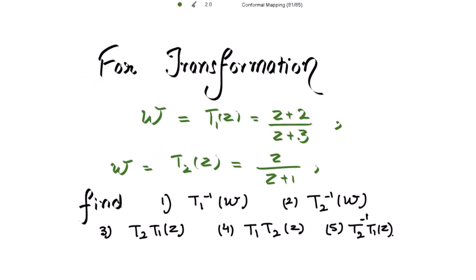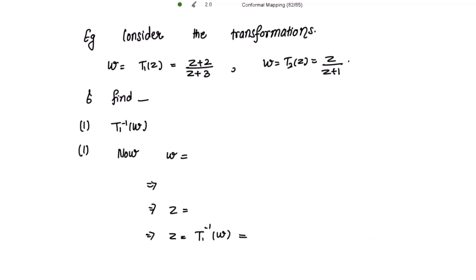Let's consider this example from the bilinear transformation. We have the transformation t1(z) equal to (z + 2) over (z + 3), and another transformation t2(z) equal to z over (z + 1). We have to find t1 inverse, t2 inverse, the product t2∘t1, the product t1∘t2, and t2 inverse of t1(z).